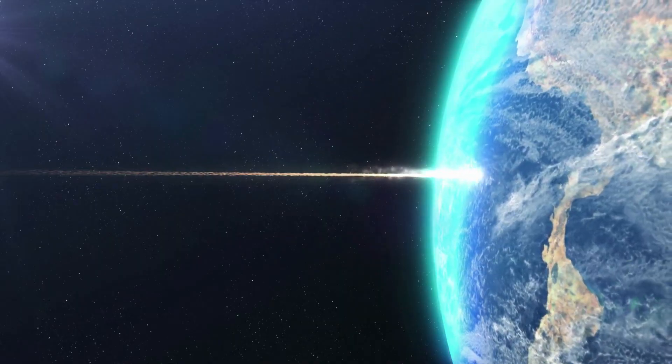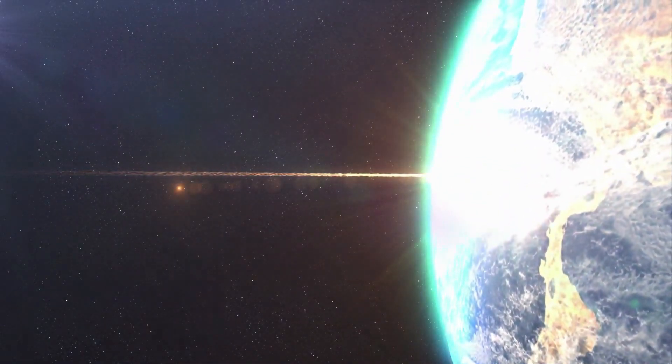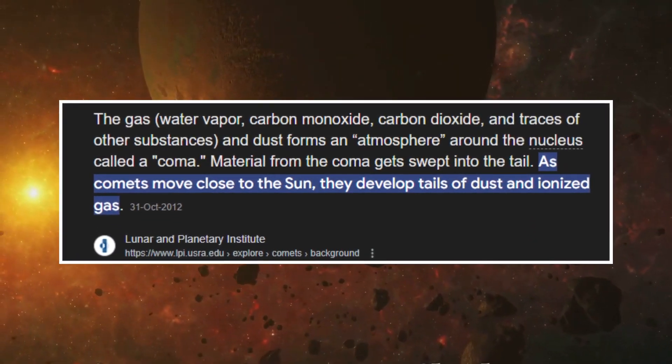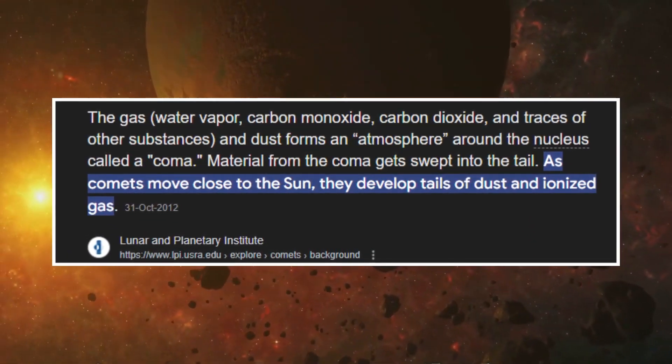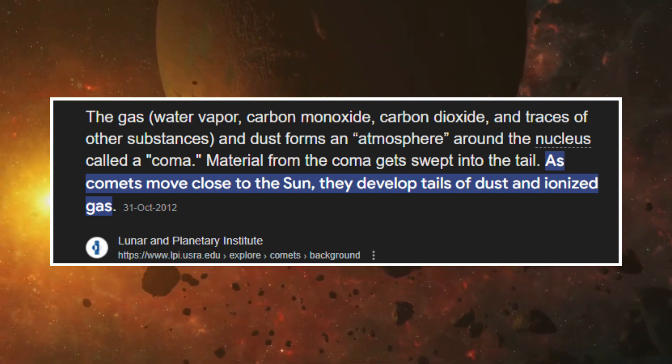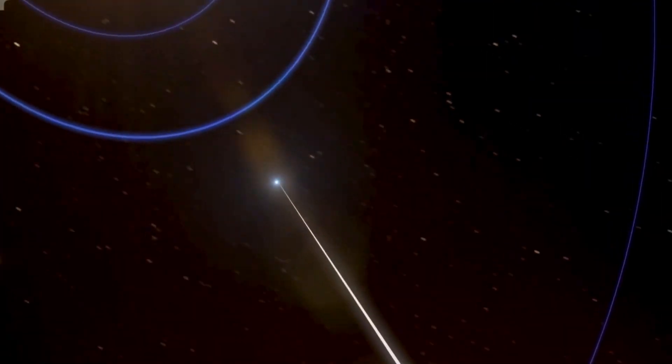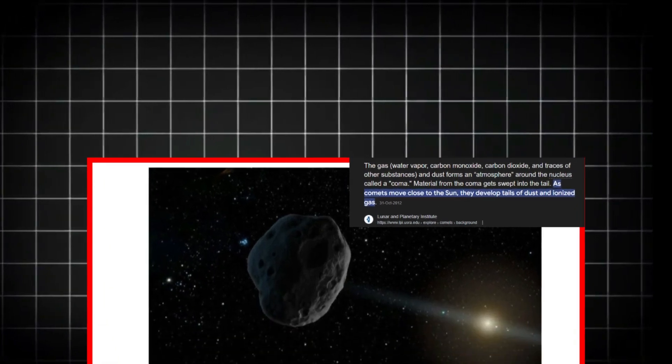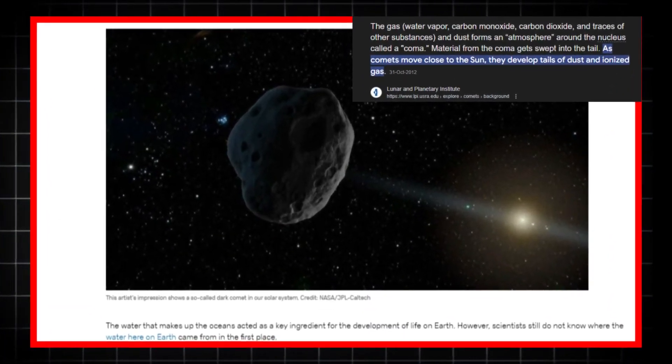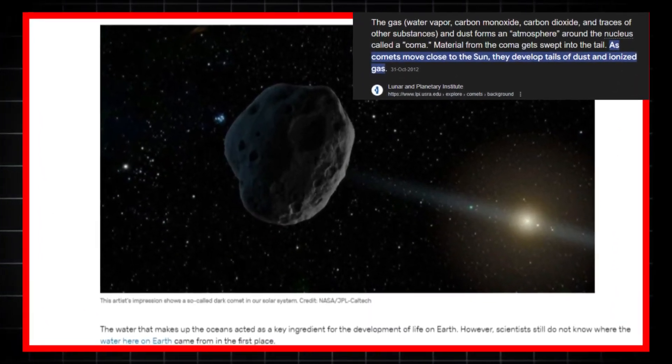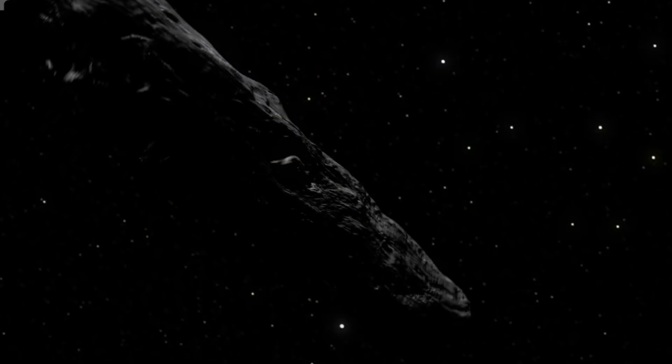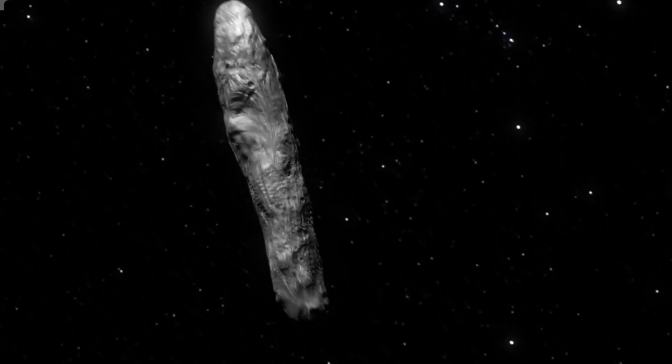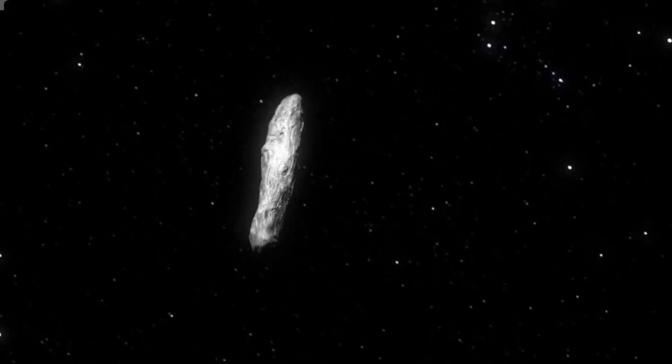The real question, though, is, what exactly is causing this acceleration? While traditional comets release gases like water vapor or carbon dioxide to generate acceleration, dark comets seem to do so in a way that isn't immediately visible. Scientists believe they may be emitting gases that are harder to detect, such as water vapor or other volatiles.